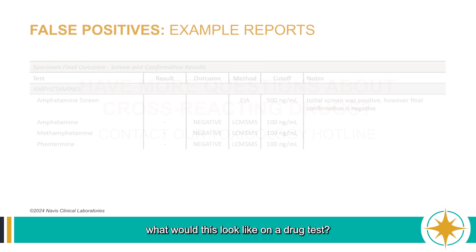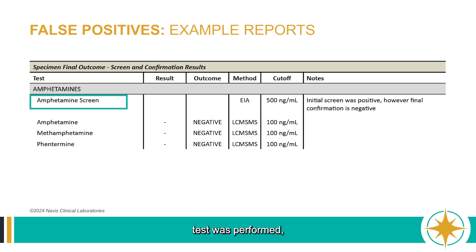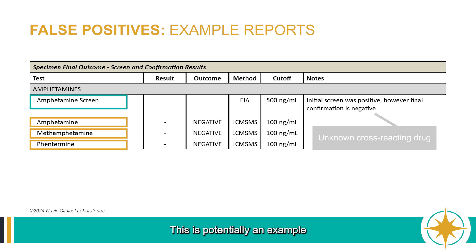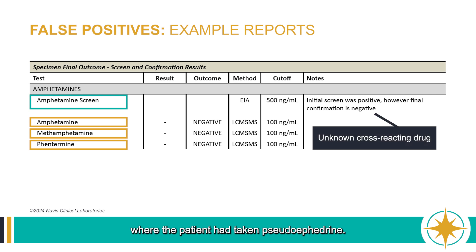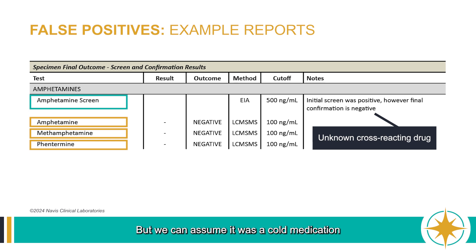Turning to the actual reports — what would this look like on a drug test? In this example, the initial screen showed a positive result for amphetamine. However, after the final confirmation test was performed, the result was negative for amphetamine, methamphetamine, and phentermine, which are the controlled substances of concern in the amphetamines drug class. This is potentially an example where the patient had taken pseudoephedrine. Because we don't typically confirm for over-the-counter medications, the report wouldn't show the medication that triggered the initial false positive, but we can assume it was a cold medication if the patient had informed the clinician.